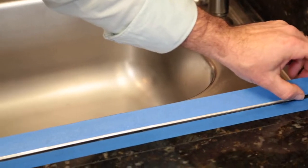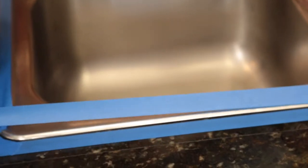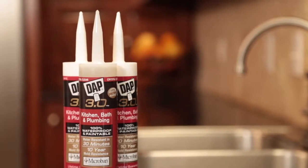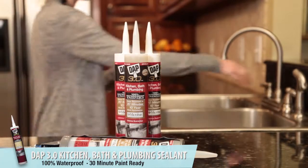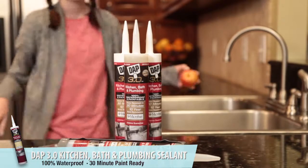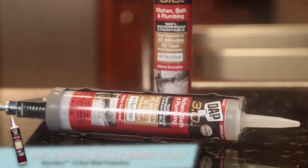If you want to get a really straight edge of caulk, apply painter's masking tape to either side of the joint before applying the sealant. Since we are sealing in the kitchen, you want a sealant specifically formulated to stand up to water, mold, and mildew. DAP 3.0 high-performance sealant is 100% waterproof and paintable in just 30 minutes. It also features Microban antimicrobial protection to prevent mold and mildew for up to 10 years.